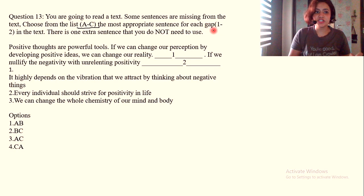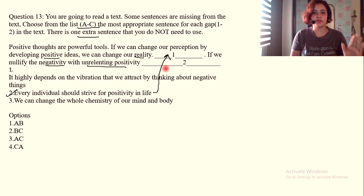Last one. You're going to read a text, some sentences are missing. From the list A to C, the most appropriate sentence for each gap has to be chosen. There's one extra sentence, so elimination has to be used. Positive thoughts are powerful tools. If we can change our perception by developing positive ideas, we can change our reality. Blank. If we nullify the negativity with unrelenting positivity, dash. What are the words here? Positive, reality, negativity, unrelenting positivity. Now we begin elimination.